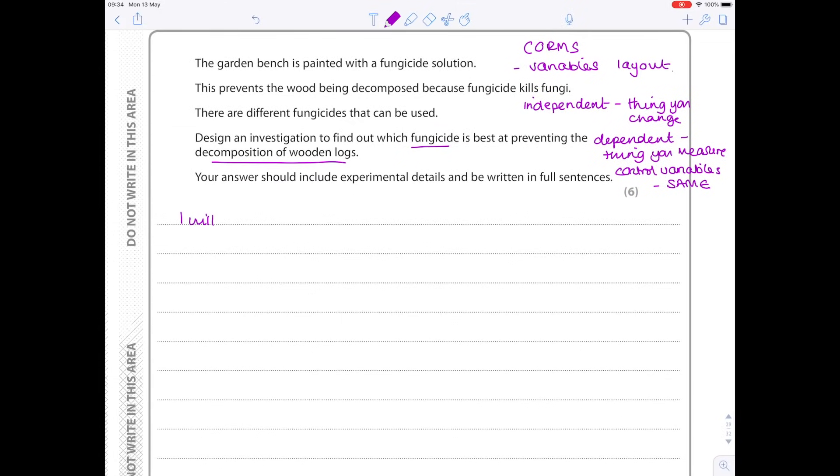Next up my dependent variable. What will I measure? Well I need to measure the rate of decomposition of wooden logs, but obviously that's going to be quite hard to measure. So the easiest thing for me to do here is measure the mass. The one which will have decomposed the most will obviously have the least mass. So I will measure the decrease in mass of the wooden logs.